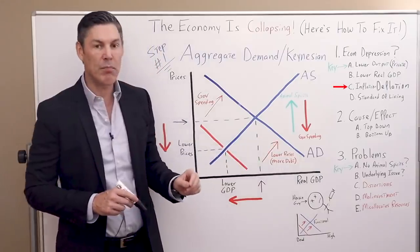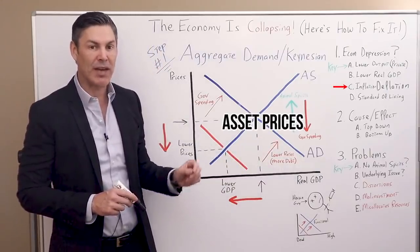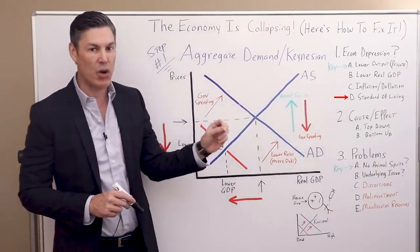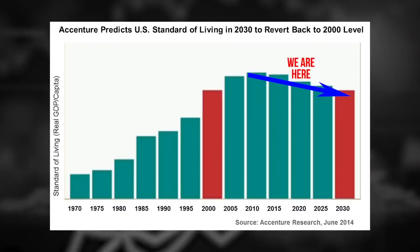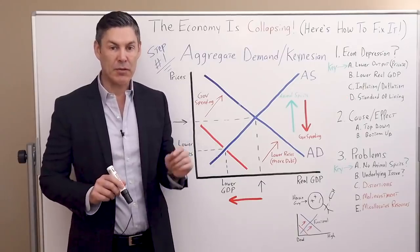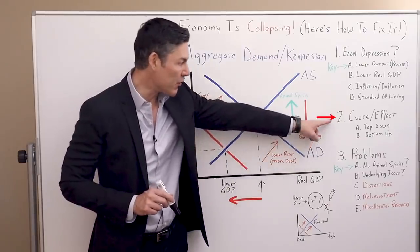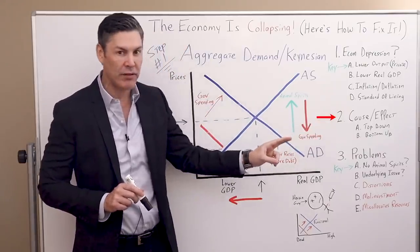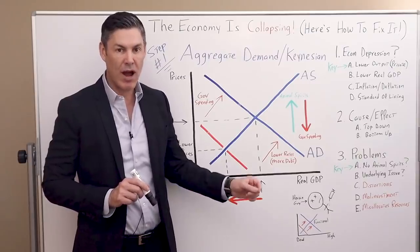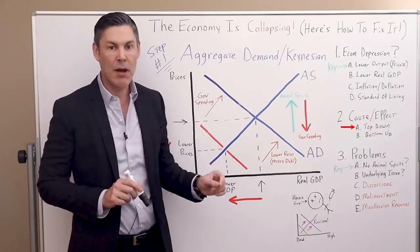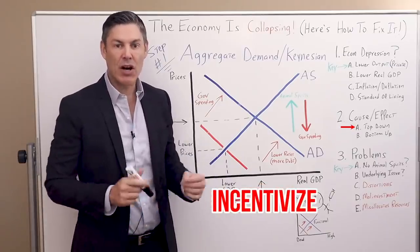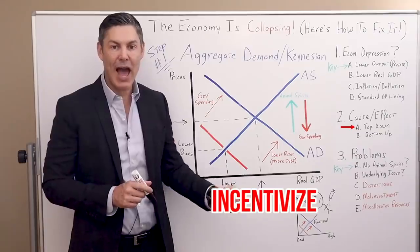Deflationary depression is what we most often think of — when asset prices and consumer prices are going down. But overall, the standard of living for the average Joe and Jane is going down regardless of what the nominal GDP headline number is reading. So what mainstream economists will do, especially Keynesian economists, is they'll look at a few different metrics and set things up in this cause-and-effect graph or chart. And the solution they always prescribe is a top-down, government-controlled micromanagement of the economy in order to incentivize the entrepreneurs and the average Joe and Jane to take the action they want.